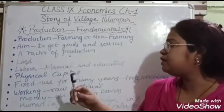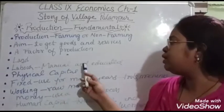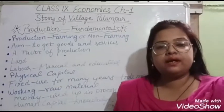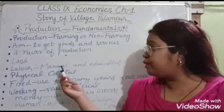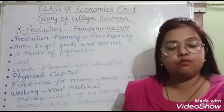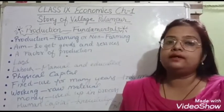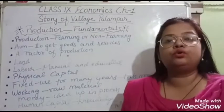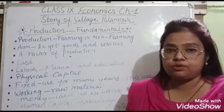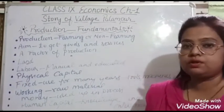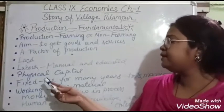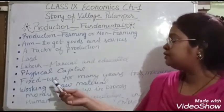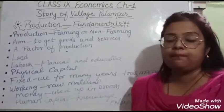The second factor is labor. Labor can be manual or educated. We can have those who do manual, physical work in the fields or industries, or educated, skilled laborers who have the knowledge to do certain work for production. The third and most important factor of production is physical capital.